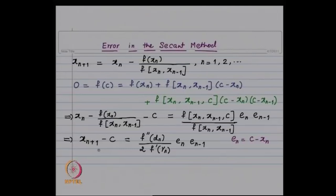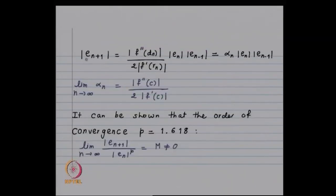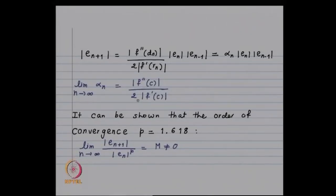Taking the modulus of both sides, we have |eₙ₊₁| = |f″(dₙ)| / (2|f′(rₙ)|) · |eₙ| · |eₙ₋₁|. If we call the quotient αₙ, then the limit of αₙ as n → ∞ equals |f″(c)| / (2|f′(c)|). This is the error in the secant method.